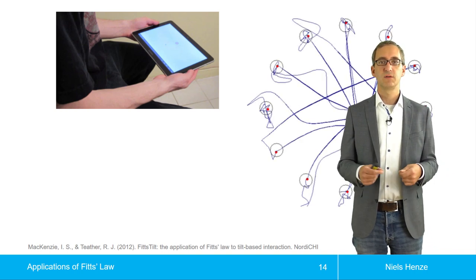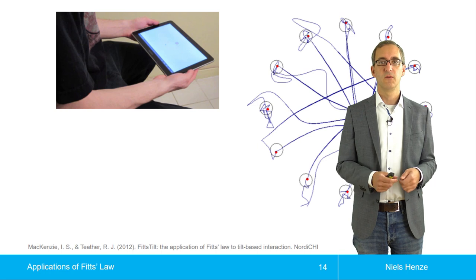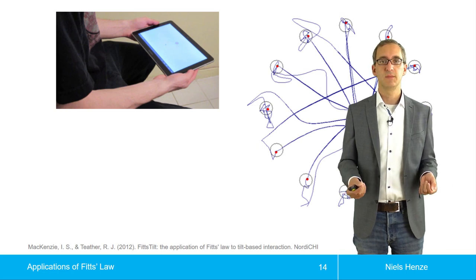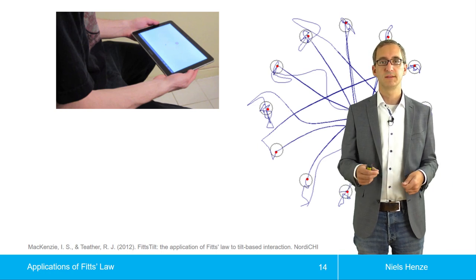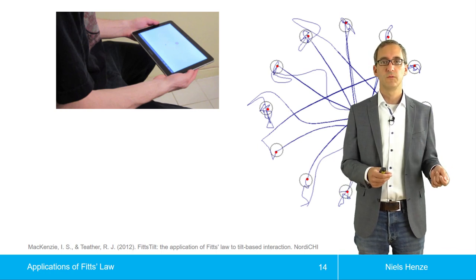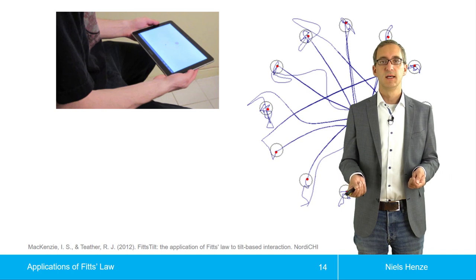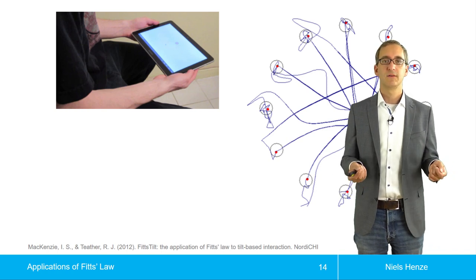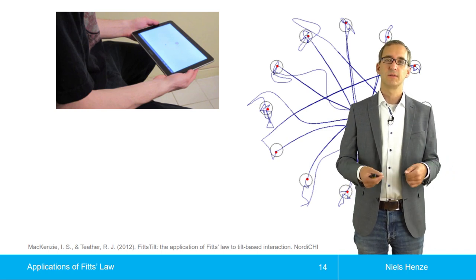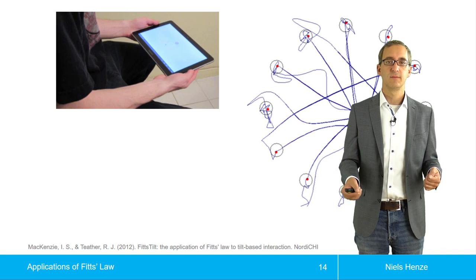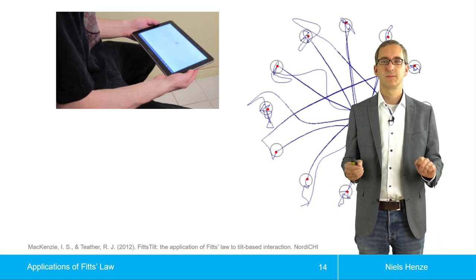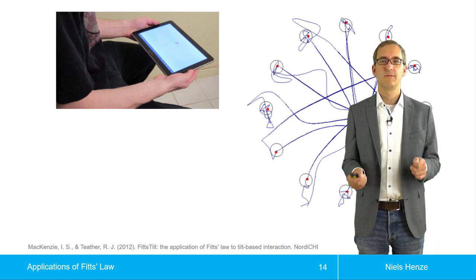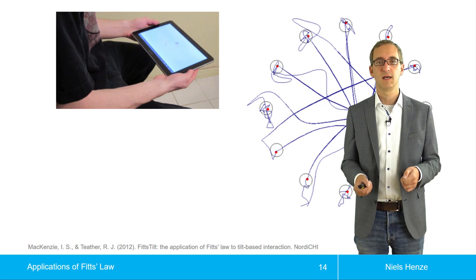These are the traces of one participant — examples of movement going from one target to the other. As we can see, there is quite a variation; participants have a hard time actually hitting the target.